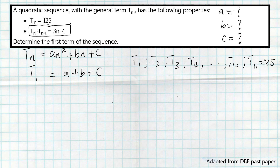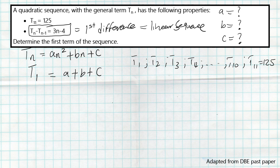The second property: Tn minus T(n-1) equals 3n minus 4. What is this formula for? They are getting the difference between the following term and the previous term — that is the first difference. We know that the first difference of a quadratic sequence is a linear sequence, hence the linear general formula given here represents the first difference of the quadratic sequence.